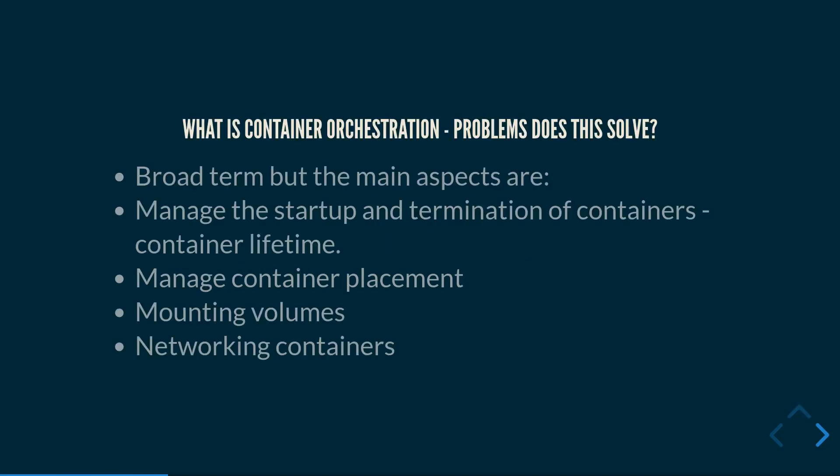So what is container orchestration and what problems does it help you solve? It's quite a broad term, but the main aspects are: it helps you with the startup and termination of containers, as well as making sure that they run correctly and are not producing any errors. It also helps you with the placement of containers on nodes — where they actually run, whether they're grouped together or spread across as many nodes as possible. You also have volumes involved, such as shared files, directories, or NFS mounts. And lastly, there's the networking between containers as well as networking to the containers.